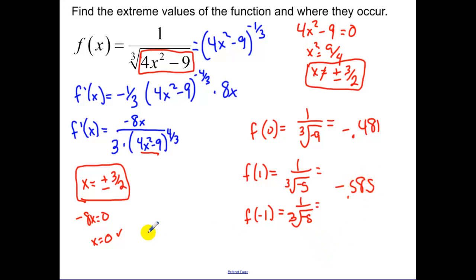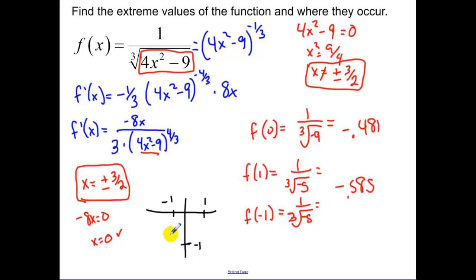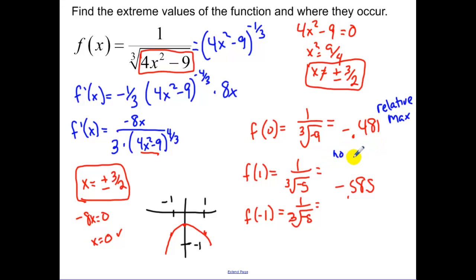Which one is bigger? The function goes from about negative 0.585, up to negative 0.481, then back down. So this value at x equals zero is going to be a relative maximum value. And for this function, we have no absolute max or min.